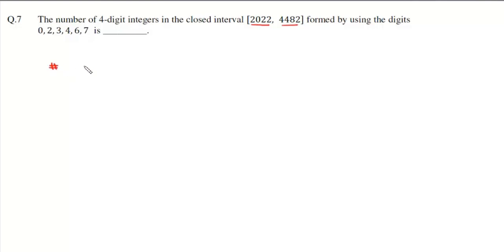We will start with numbers which start with 202. If the first three places are already filled, then we can fill this fourth place with any of 2, 3, 4, 6, and 7. We are choosing 2 because 2022 is included, so for this last place we have five choices.